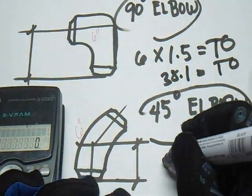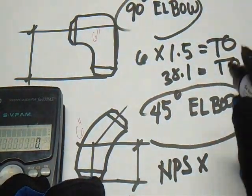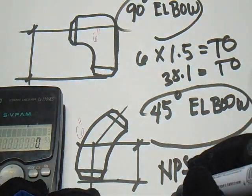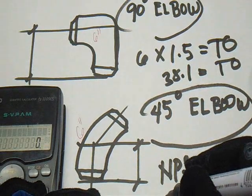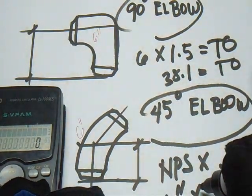So nominal pipe size or NPS multiplied by 0.625, or 6 inches multiplied by 15.8.